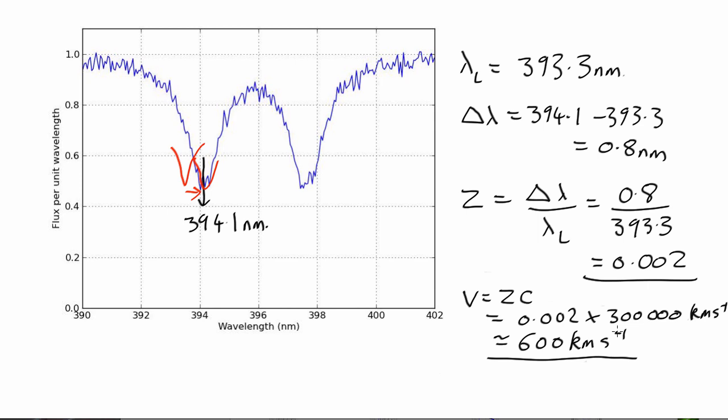Is it going towards us or away from us? You can see that the line has shifted from where it would have been there if it had been rest wavelength in the laboratory to over here. It's moved to a longer wavelength, to the red, so it's a redshift. So it's receding from us, moving away.